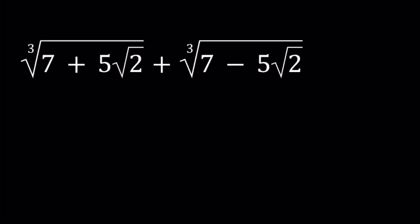Hello everyone. In this video we're going to be simplifying a radical expression with cube roots. We have the cube root of 7 plus 5 times the square root of 2 plus the cube root of 7 minus 5 times the square root of 2. We're going to be simplifying this expression and finding a much simpler result. I'll be presenting two methods and let's start with the first one.